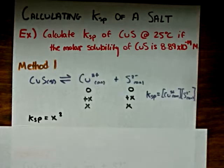Therefore, combined, they're equal to X squared. And we know that X is equal to the molar solubility of copper sulfide. This is because at equilibrium, the concentrations of the ions are equal to 8.89 times 10 to the negative 14. That is what molar solubility represents: the concentration of the ions at equilibrium.